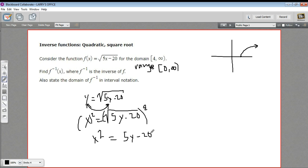And then to solve for y, I need to add 20 to both sides. So I'm going to get x squared plus 20 equals 5y. And then I just divide by 5.